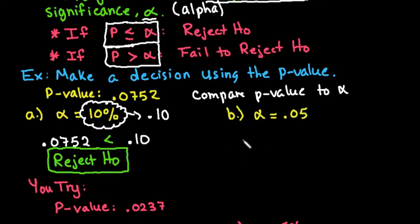For the second one we're going to do the same thing with alpha equals 0.05. It's already written in decimal form so I don't have to convert it from a percent to a decimal. I started to write the alpha first. Let me switch that. Let me write the p-value first.